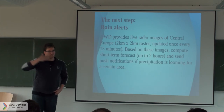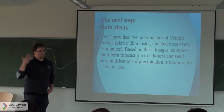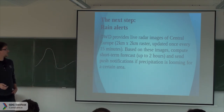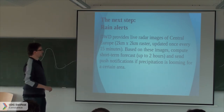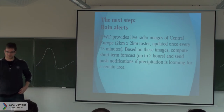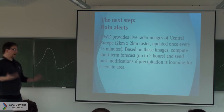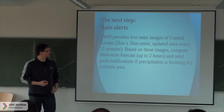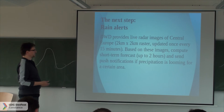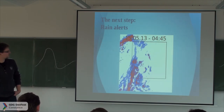Just a few words on the next steps. For the website, one feature is rain alerts — you want to know if in the next half hour rain is coming to your location. The DWD provides rain radar images. We use the Central Europe images, which are at two kilometers per pixel and updated every 15 minutes. I'm a mathematician, not an educated developer, so I came up with a method to compute a short-term forecast based on these radar images — you can go up to two hours into the future and send push notifications if rain is coming, with a certain degree of certainty.